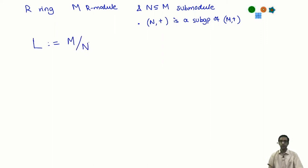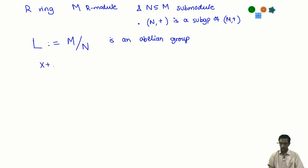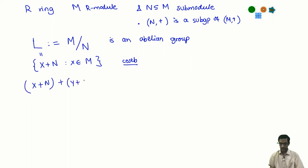In this case, M is an abelian group. So M/N with this addition — I can talk about the quotient group, and this is in fact an abelian group. What are the elements? Elements look like cosets X+N, with X varying over M. This is a set of cosets, and the group operation is (X+N) + (Y+N) = (X+Y)+N for all X and Y in M.